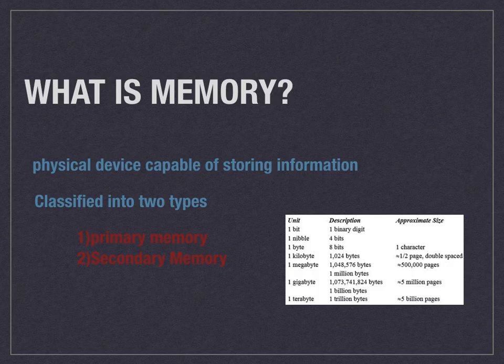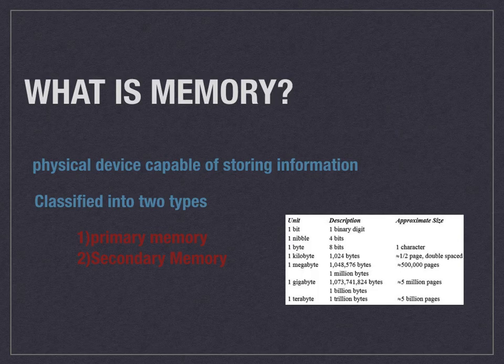If you want to store any programs or data, we need memory. Storing can be a permanent storage or a temporary storage. Based on this, computer memory can be classified into two types: the first one is primary memory and the second one is secondary memory.